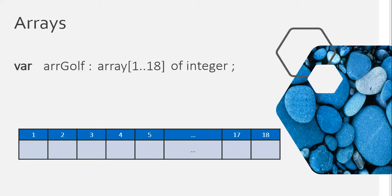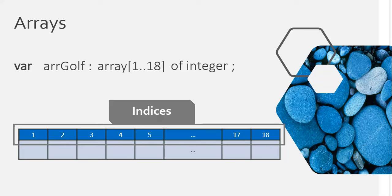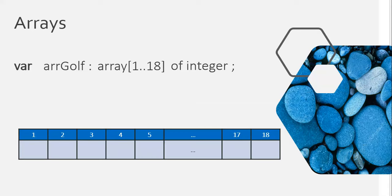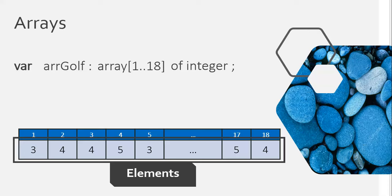The positions at the top — 1, 2, 3, 4 — we call those the indices or index. The values we put into those blocks, for example a 3 at position 1 and a 4 at position 2, those are what we call the elements. When we refer to the elements of the array, we're talking about the values inside the array. When we talk about the indices, we're talking about the position in the array.